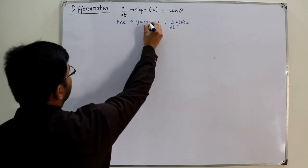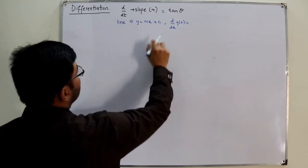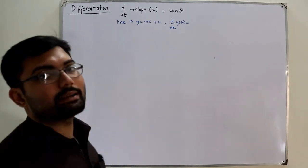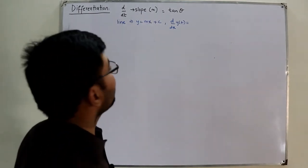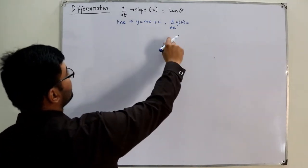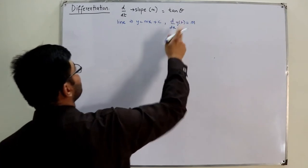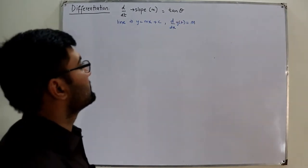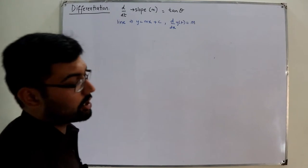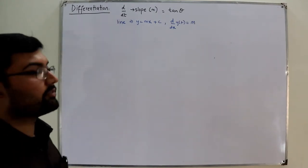In our case the independent variable x is equal to t, so m comes outside, the derivative of x with respect to x is 1, giving us m. And c is a constant, so the derivative of a constant is 0. This is how you get the slope of a line.